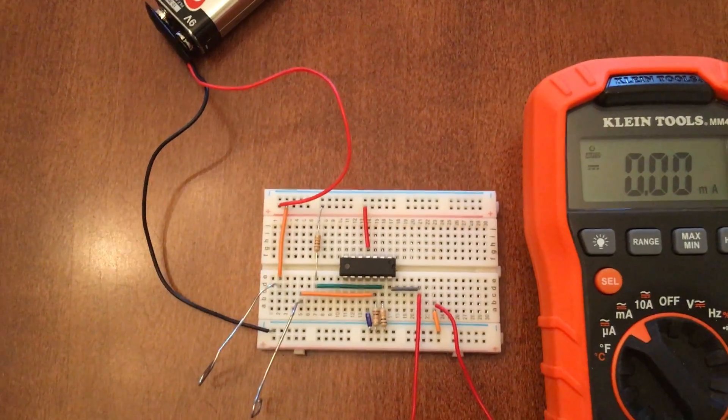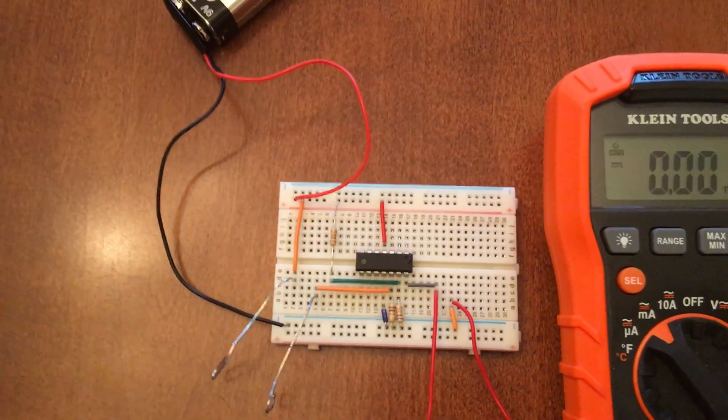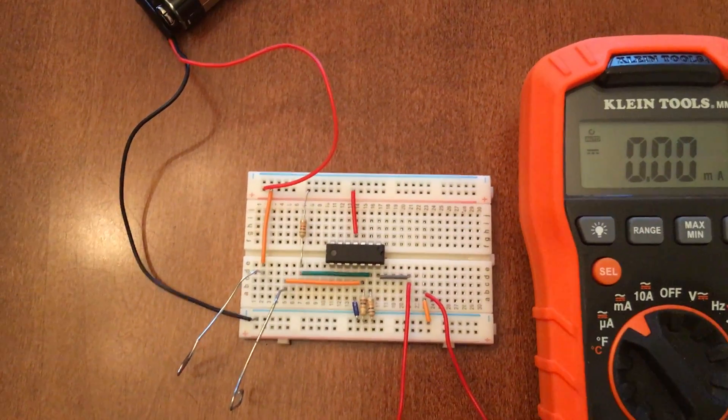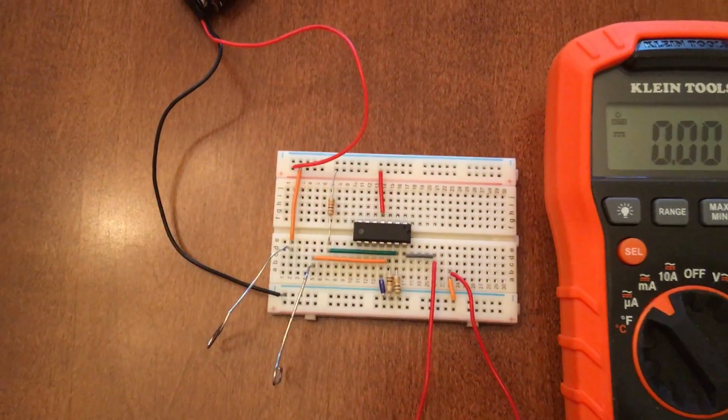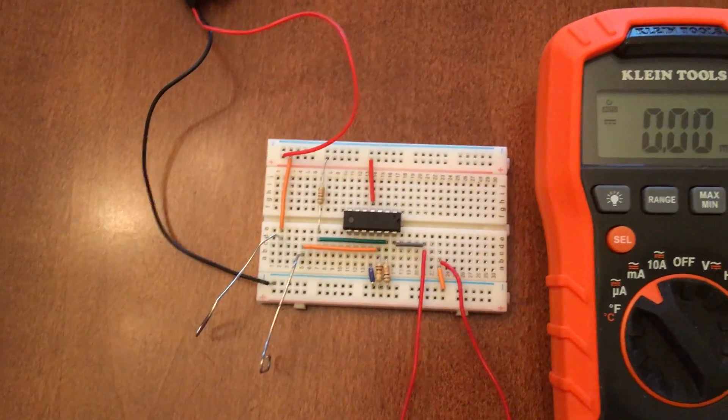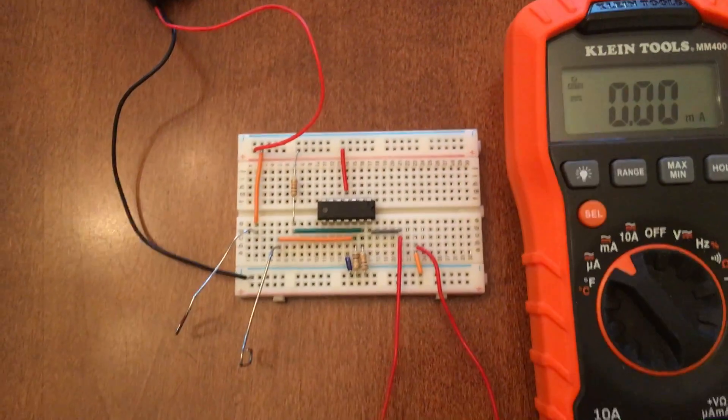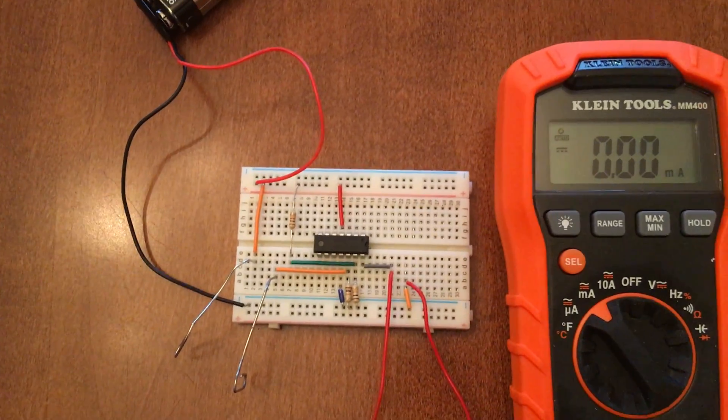One branch goes into the LN324N operational amplifier, and a separate branch goes through this 1k resistor, which provides a voltage drop that comes over and feeds into the inverting input.